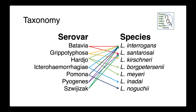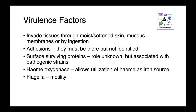The opposite is also true — we can have multiple serovars within an individual species. So Leptospira interrogans can include Bataviae, Grippotyphosa, Hardjoe, Icterohaemorrhagiae, and others. These are not mutually exclusive groups. These organisms invade tissues through moist or softened skin, through mucous membranes, and also by ingestion. They must produce some kind of adhesins to attach to tissues, but as of yet these haven't been identified.